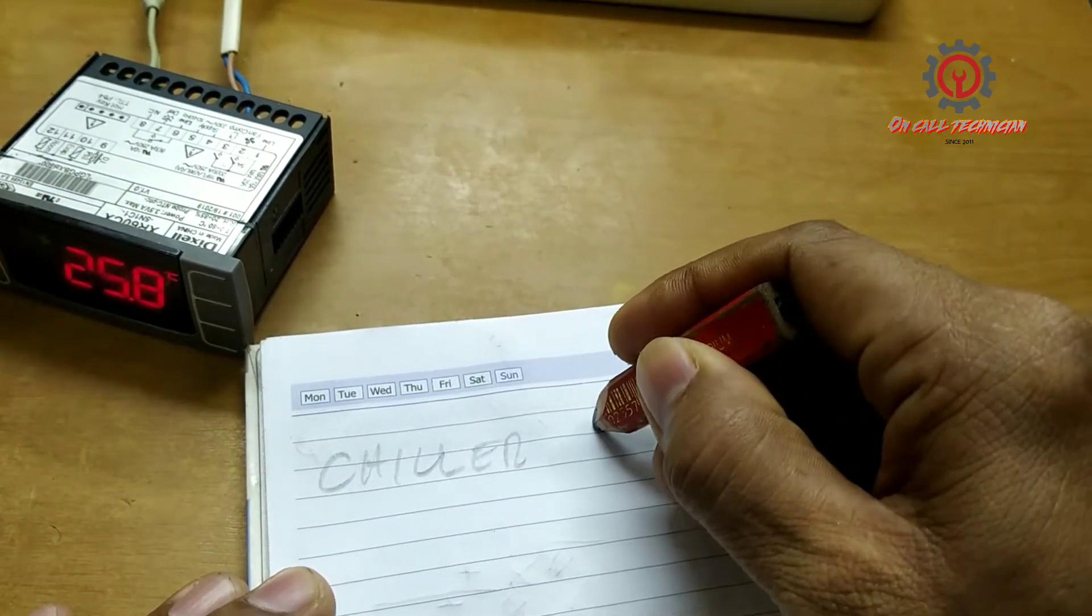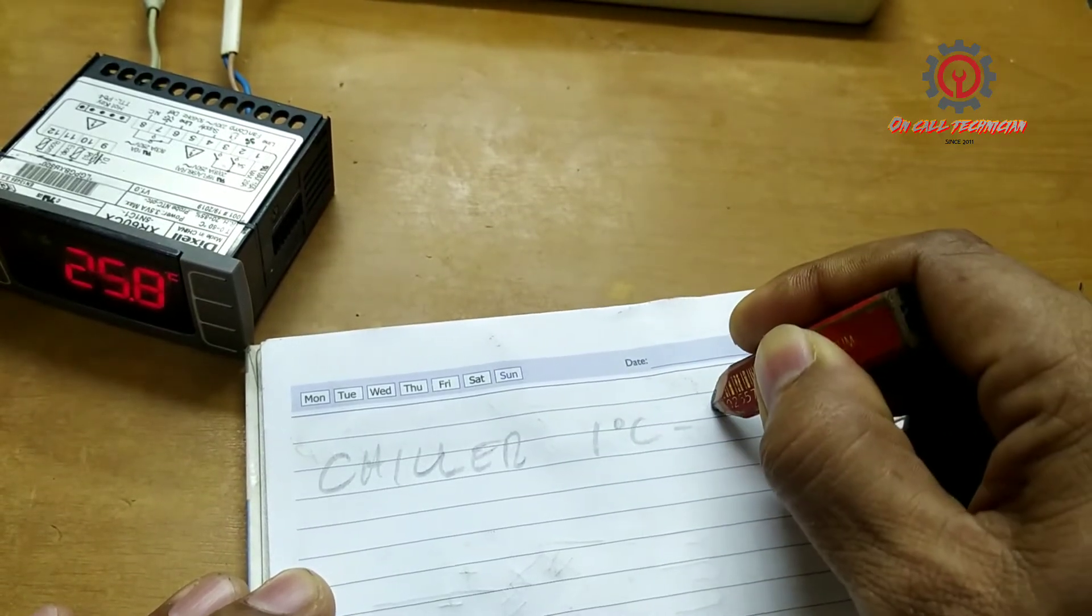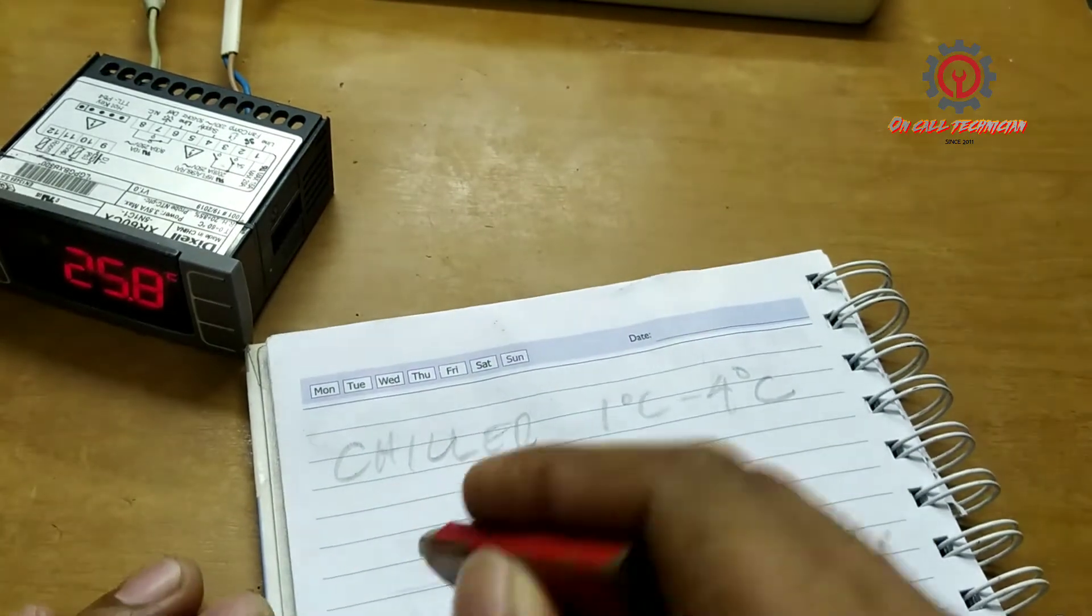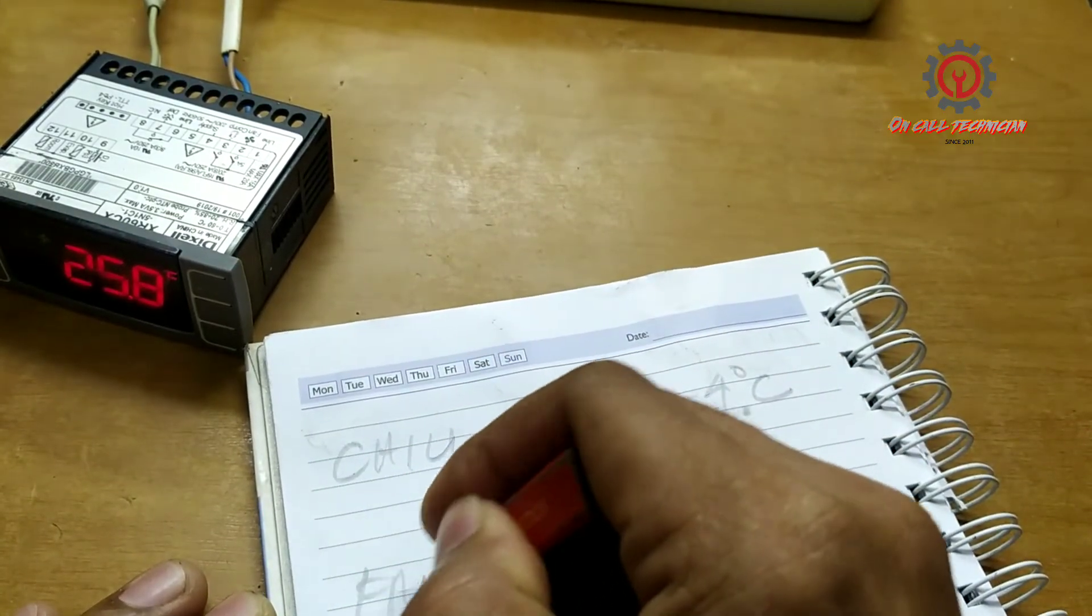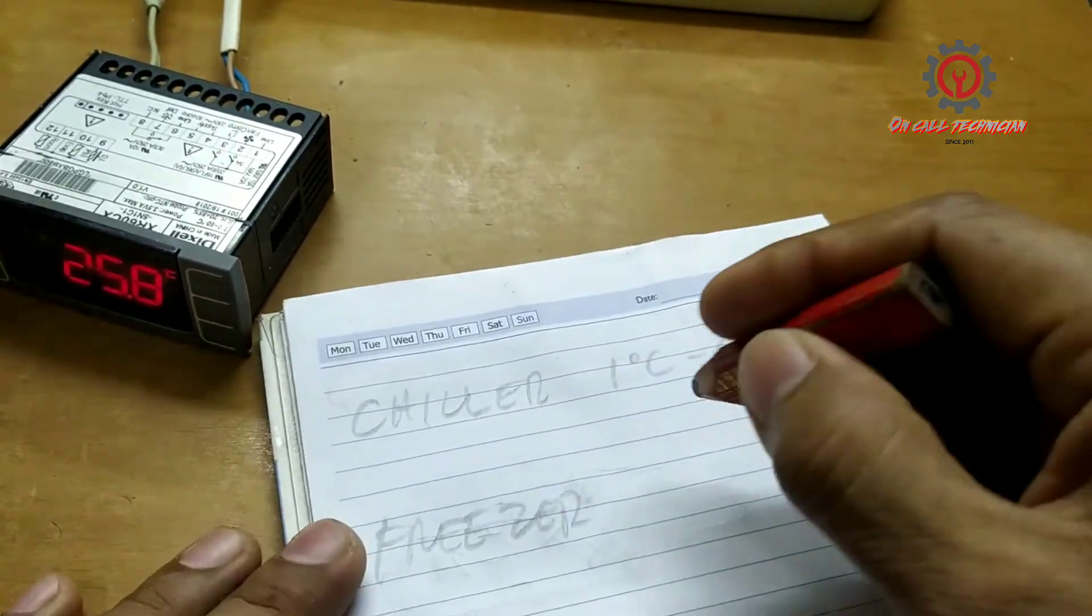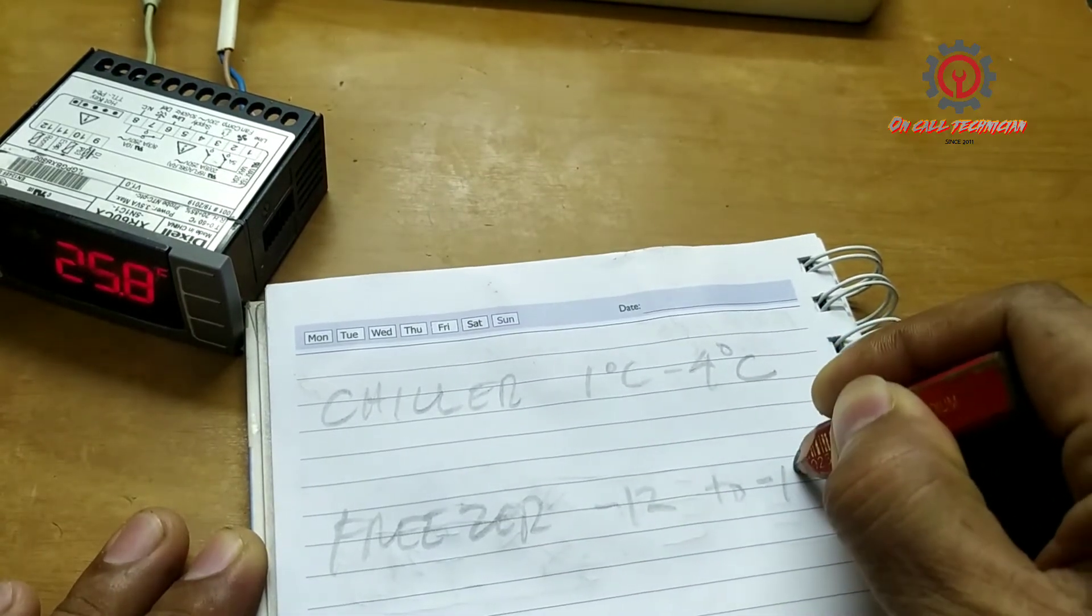The freezer setting is between negative 12 to negative 18 degrees Celsius.